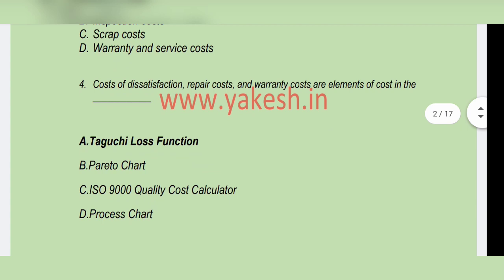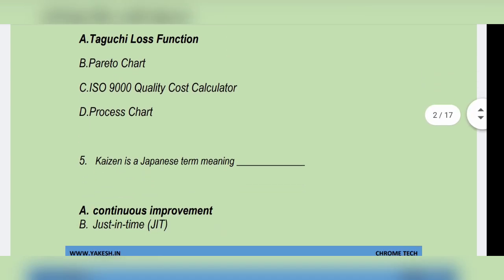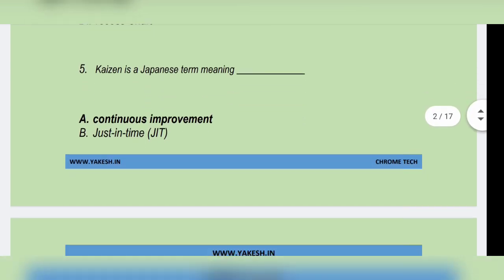Cost of dissatisfaction, repair cost, and warranty cost are elements of cost in — Option A: Taguchi loss function. Next question: Kaizen is a Japanese term meaning — Option A: Continuous improvement.